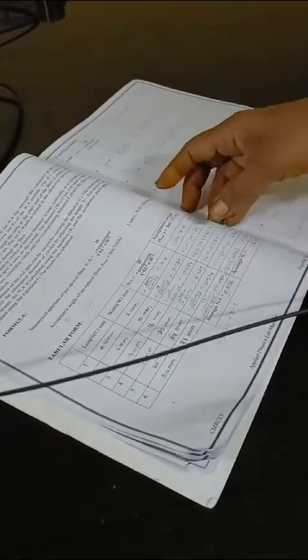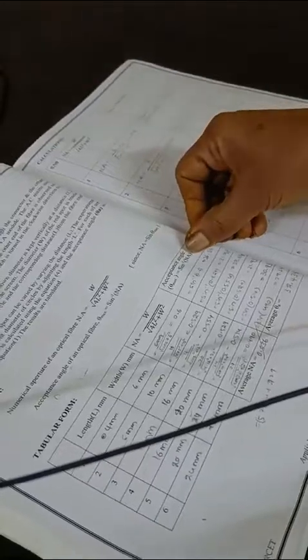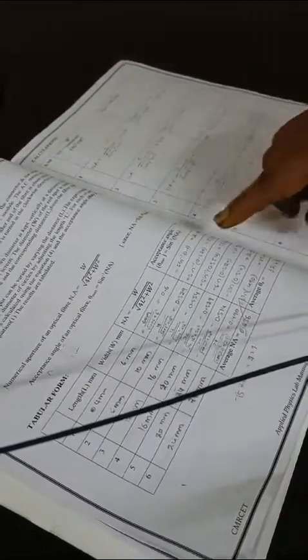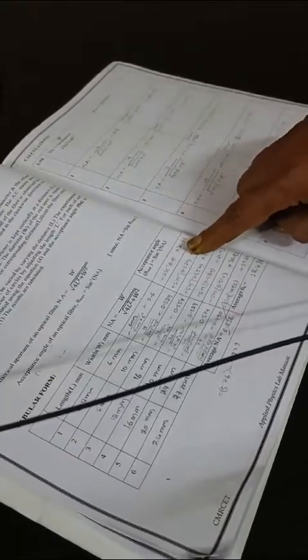Once you calculate the numerical aperture, you can also find the acceptance angle. The acceptance angle equals the inverse sine of the numerical aperture.